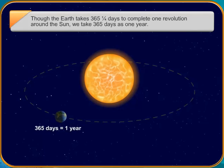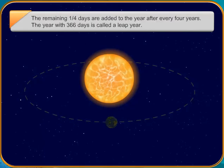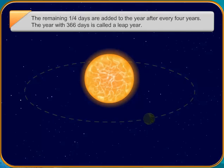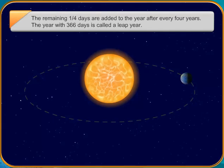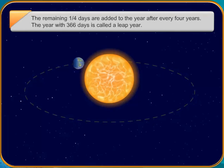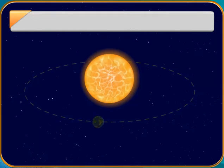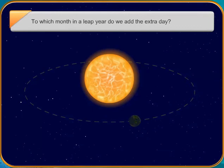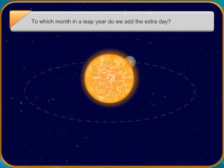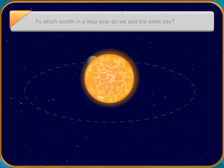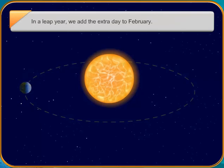In position B, the Sun's rays fall directly on the southern hemisphere while they fall on the northern hemisphere in a slanting manner. When the Earth is in position B, the southern hemisphere will be hotter and it will be summer there. Meanwhile, the northern hemisphere will experience winter.